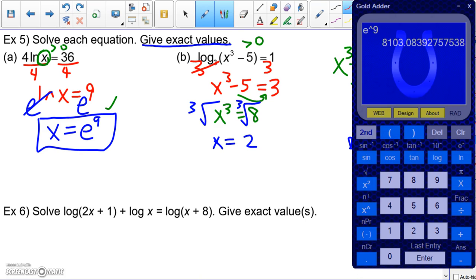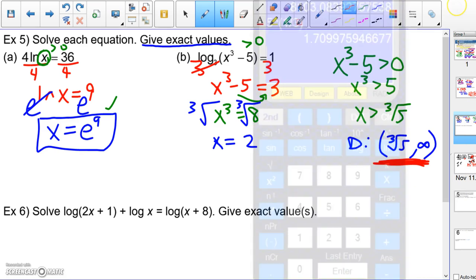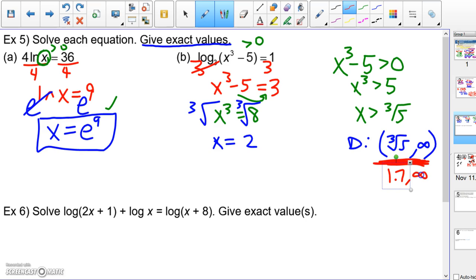what is the cube root of five? Five to the one-third power, 1.7. So we're talking about 1.7 to infinity. As long as your answer fits in that, then you're in good shape. Since it does, x equals two is the answer. So make sure you remember to do the domain.